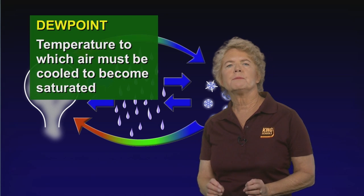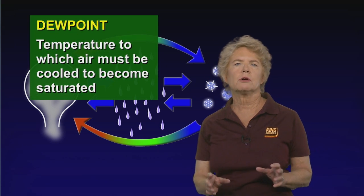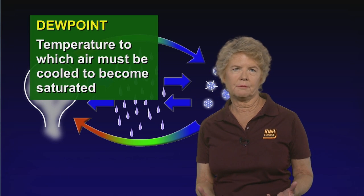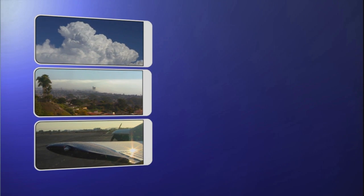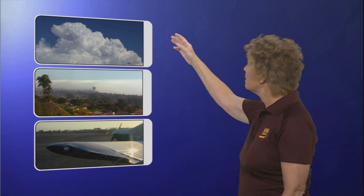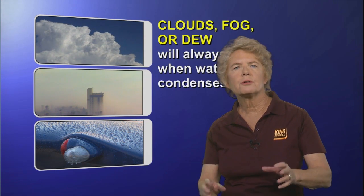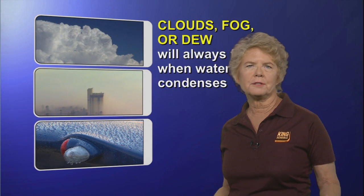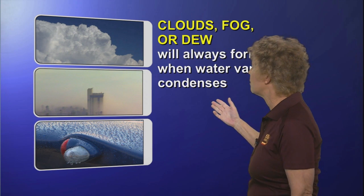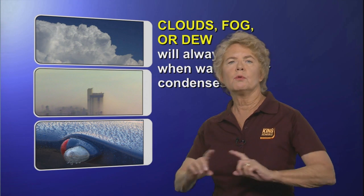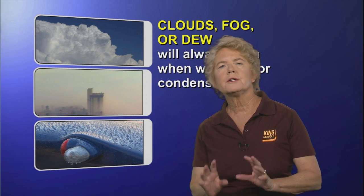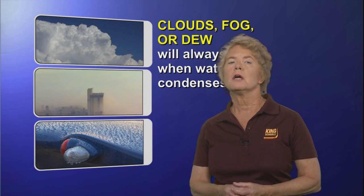Dew point is the temperature down to which the air has to be cooled in order to become saturated. When water vapor condenses, clouds, fog, or dew will always form. However, when relative humidity equals 100%, you won't necessarily get clouds, fog, or dew — because depending on the temperature, the water vapor may skip the liquid state and go directly to the frozen state instead.